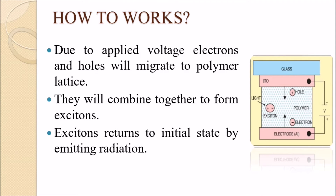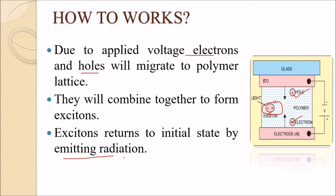When voltage is applied, electrons and holes migrate to the polymer lattice. They combine together to form excitons. These excitons are unstable and return to their initial state by emitting radiation — this is how LEPs become light emitting.